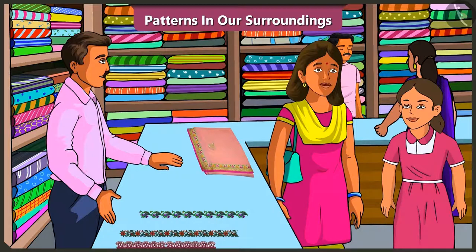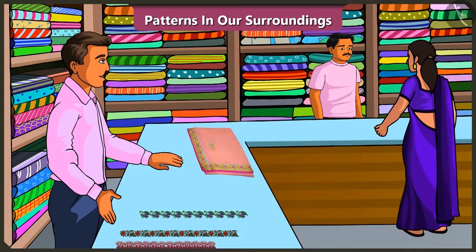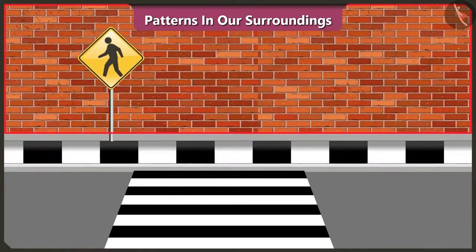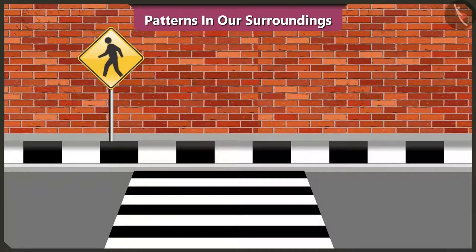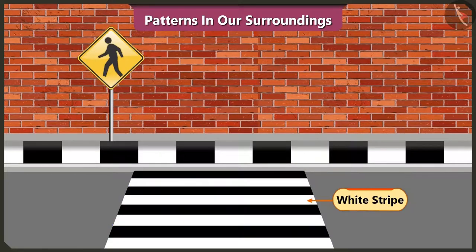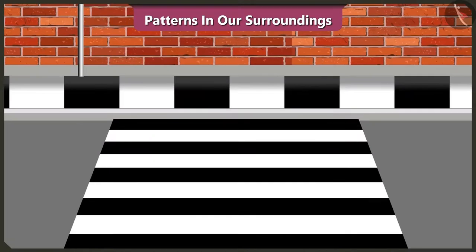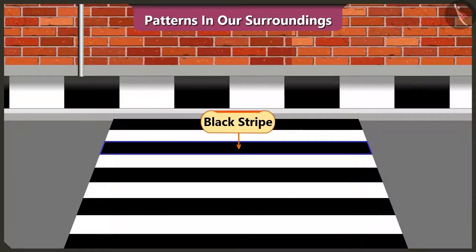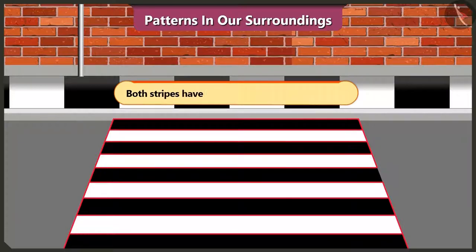Vinny, let us go. Yes, let's go. Vinny, look at this wall. This wall has a pattern made of bricks. Oh yes, now look. This zebra crossing has a pattern of black and white stripes. Yes, this pattern has black, white, black, white lines. Both black and white color lines have been used repeatedly.